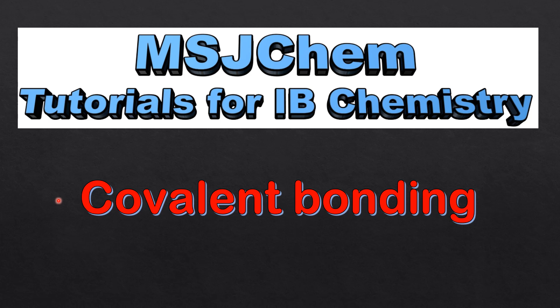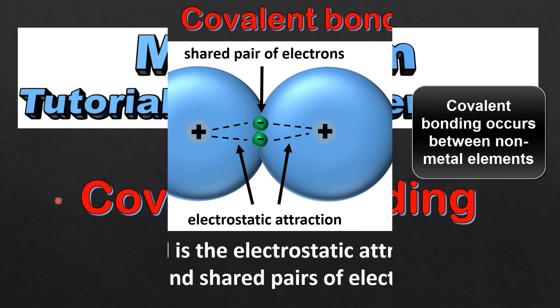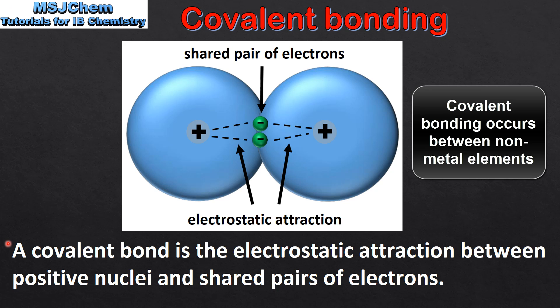This is MSJChem. In this video I'll be looking at covalent bonding. We'll start with a definition: a covalent bond is the electrostatic attraction between positive nuclei and shared pairs of electrons.